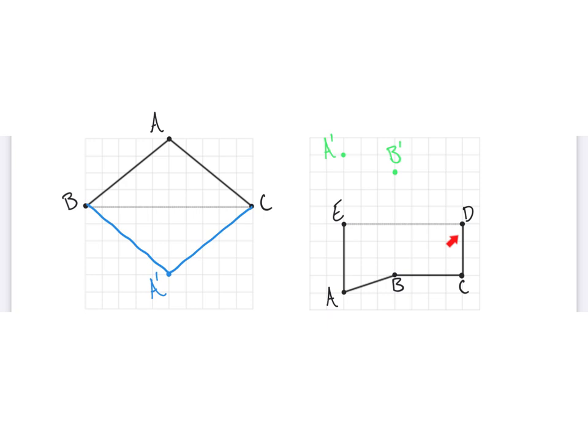So, we'll go 1, 2, 3 units up from the line of symmetry. Just like our last figure, point E and D lie along the line of symmetry. So, they do not change. And that is our completed figure.